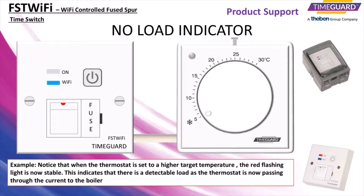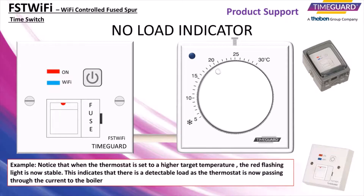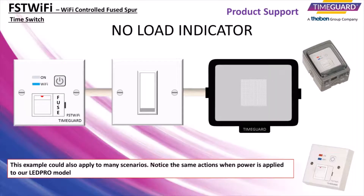Notice that when the thermostat is set to a higher target temperature, the red flashing light is now stable. This indicates that there is a detectable load, as the thermostat is now passing through the current to the boiler. This example could also apply to many scenarios.